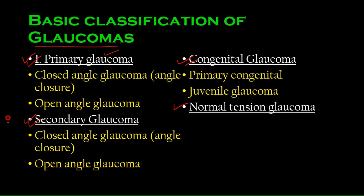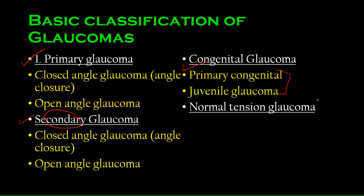Secondary glaucoma is similar but there's no direct problem in the production or drainage systems. Instead, there is a systemic underlying condition affecting the eye structures that causes glaucoma. Congenital glaucoma occurs in neonates. Normal tension glaucoma is a unique type where intraocular pressure is normal, yet the patient still has glaucoma and optic neuropathy.